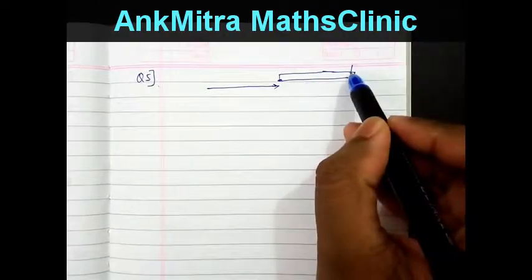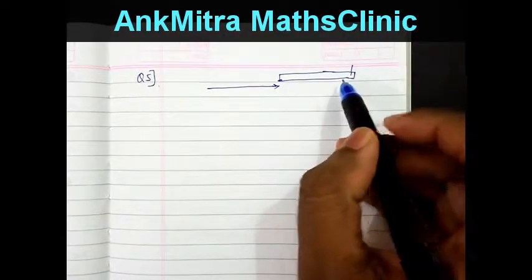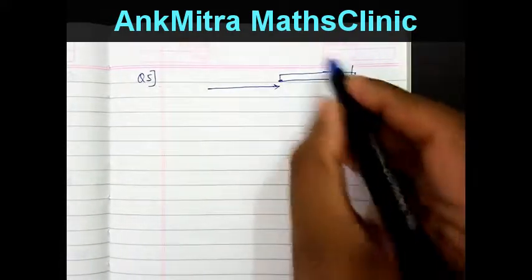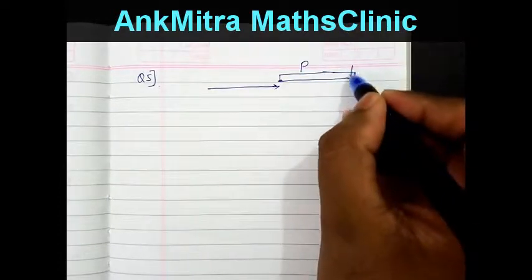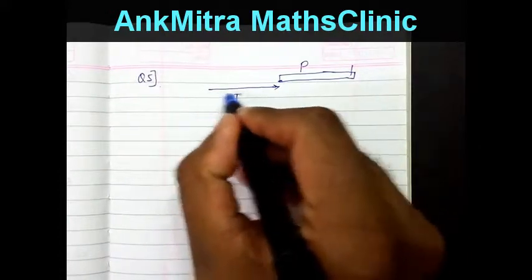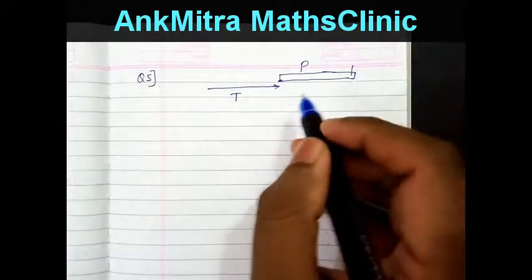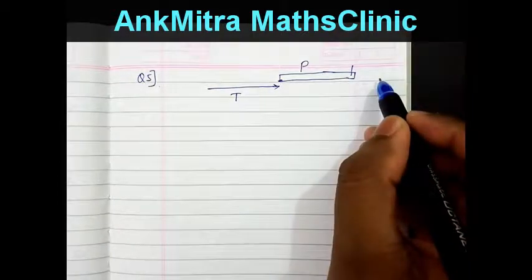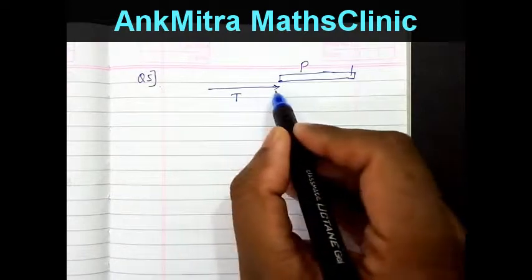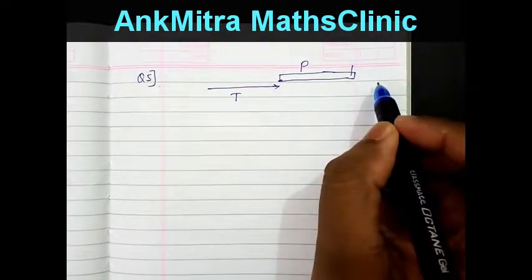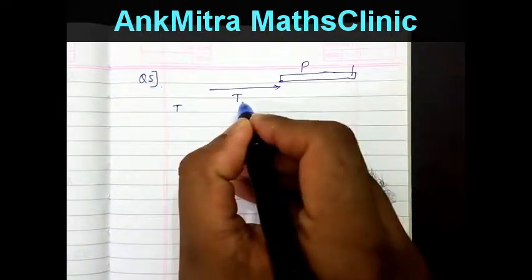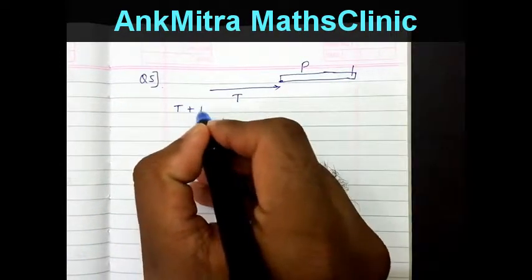In this question, a man is standing on a railway platform and a train is crossing the platform. Let this be the platform P, this be the man standing on it, and this be the train crossing the platform. When the train crosses the entire platform, the total distance covered is the length of the train T plus the length of the platform P.